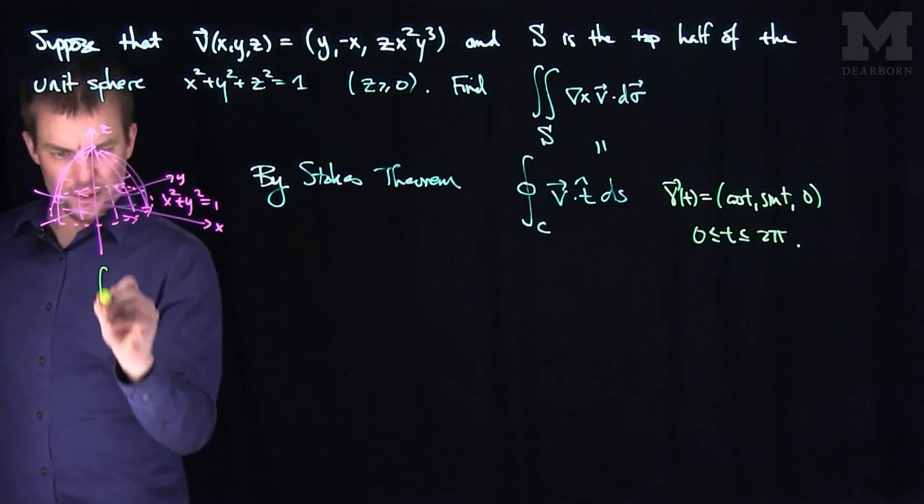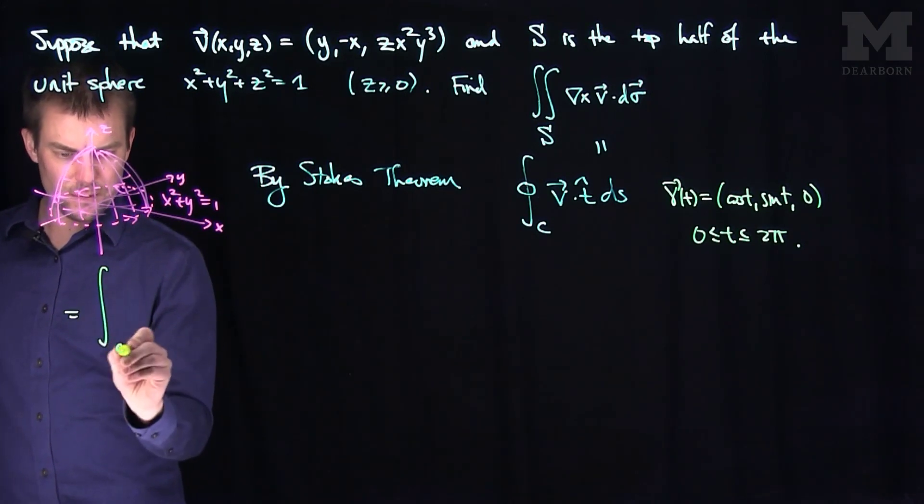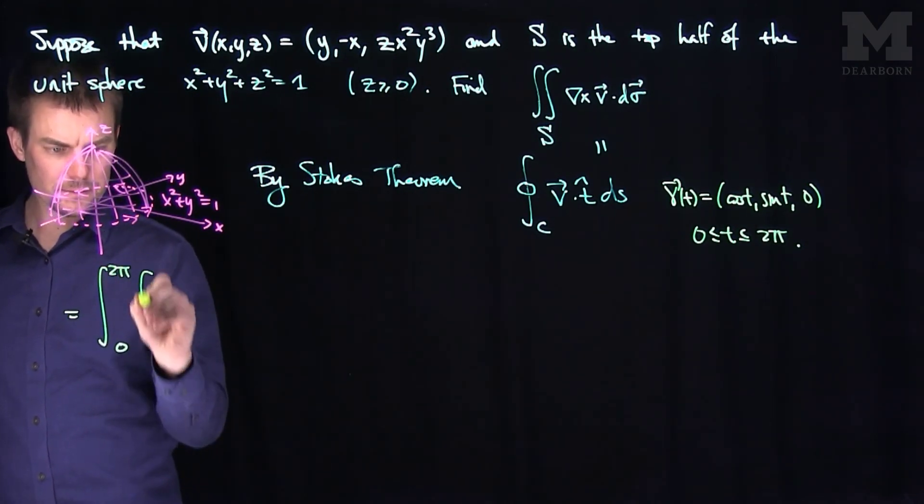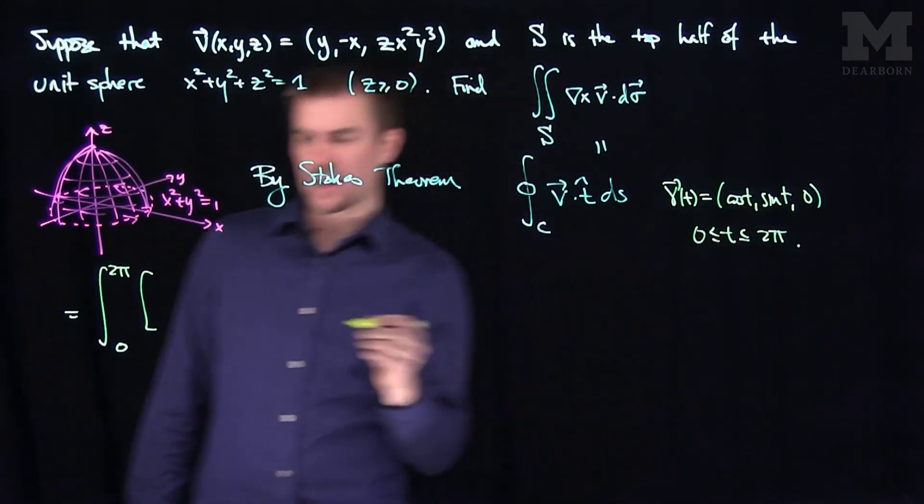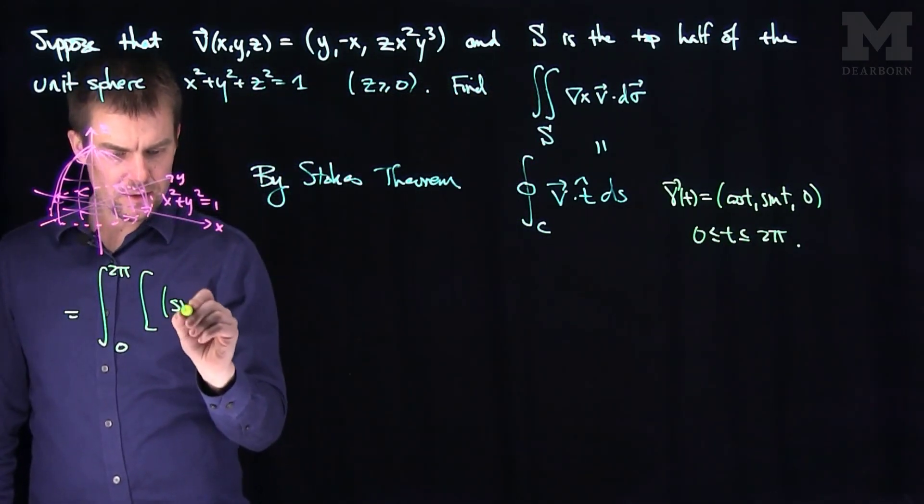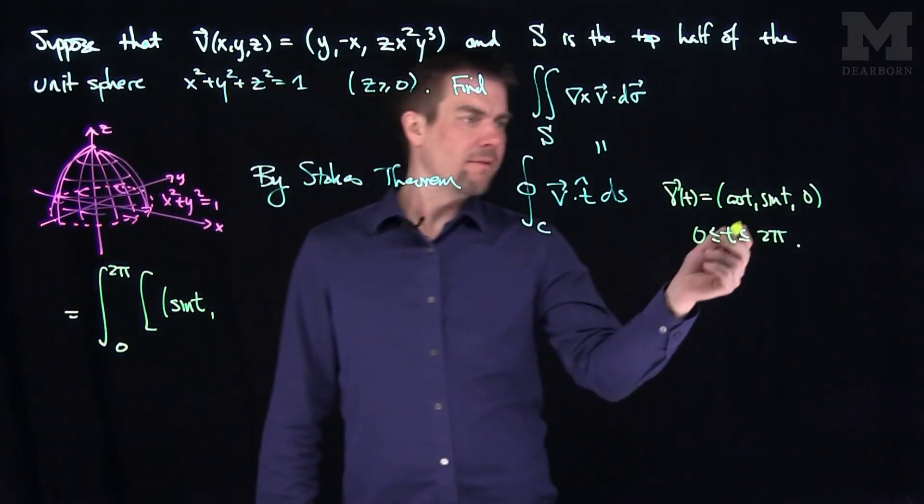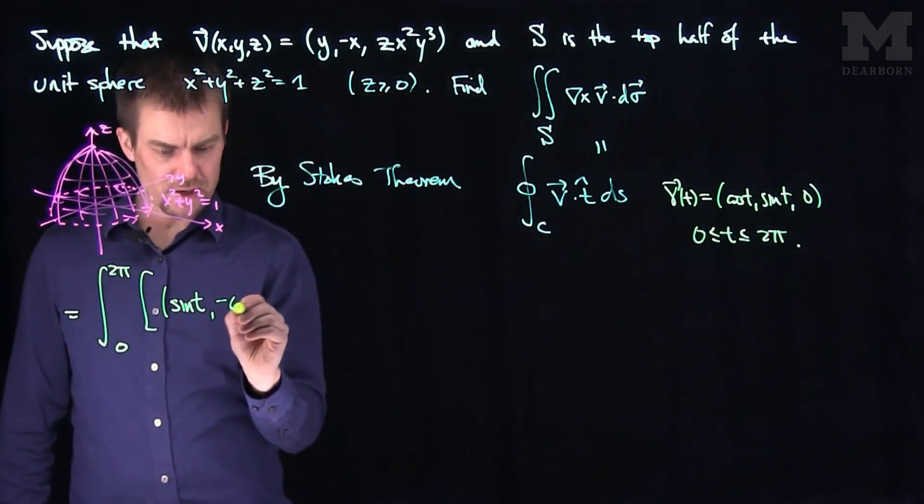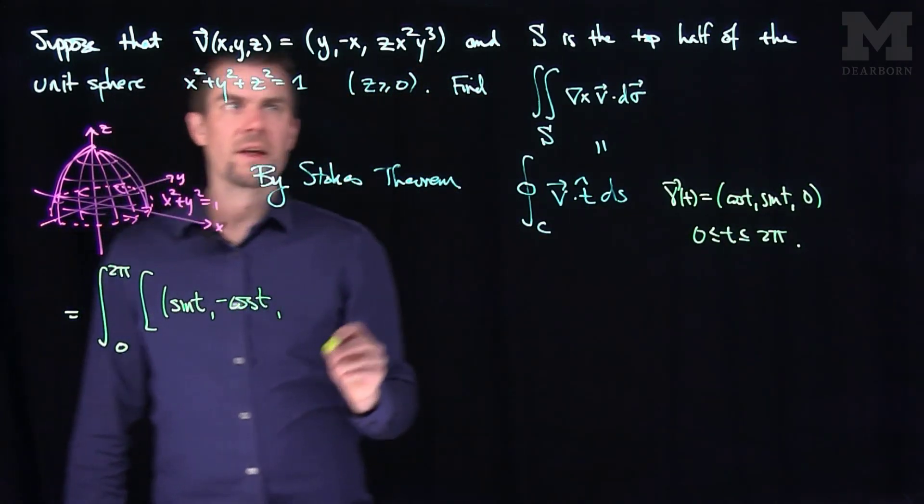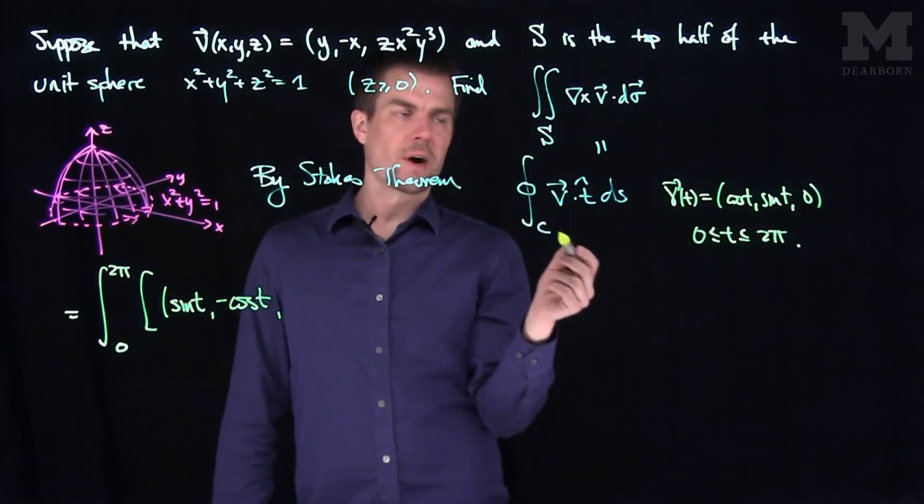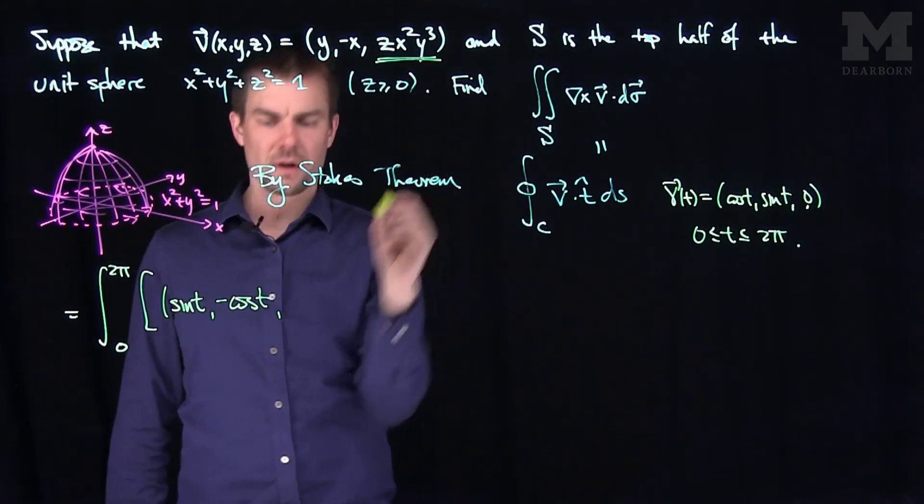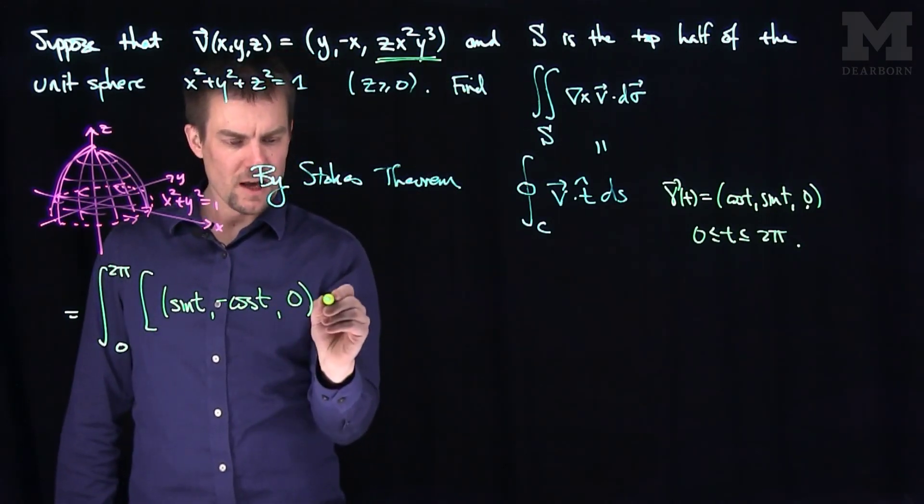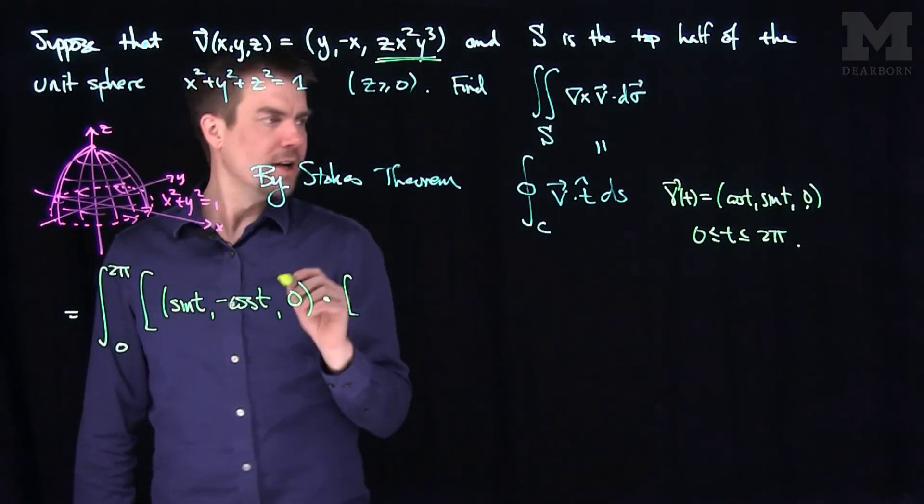And so let's do this flow integral. The flow integral will therefore be equal to the integral from zero to two pi. And then I'm going to plug in what's y equal to on the curve. Y is sine on the curve, so I have a sine of t. Then I have a negative x, which is negative cosine of t. Then I have z times x squared times y cubed, but z is equal to zero on this curve. So this whole expression on the curve is going to be zero.